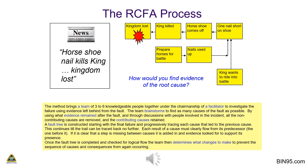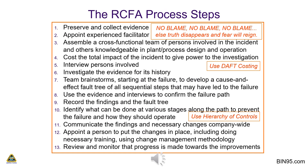The recommended RCFA process steps are: (1) preserve and collect evidence; (2) appoint an experienced facilitator; (3) assemble a cross-functional team of persons involved in the incident and others knowledgeable in plant and process design and operation; (4) cost the total impact of the incident to give power to the investigation; (5) interview persons involved; (6) investigate the evidence for its history; (7) team brainstorms starting at the failure to develop a cause-and-effect fault tree of all sequential steps that may have led to the failure; (8) use evidence and interviews to confirm the failure path; (9) record the findings in the fault tree.